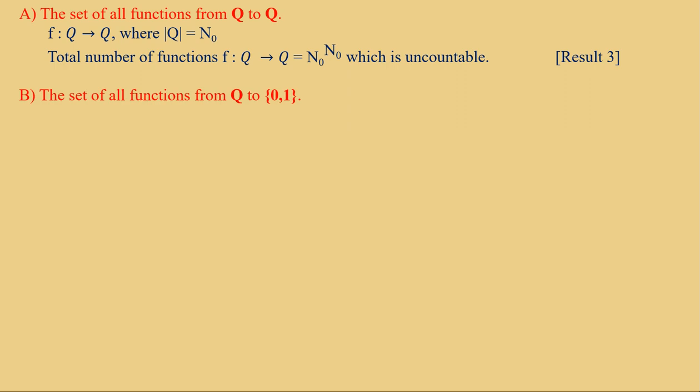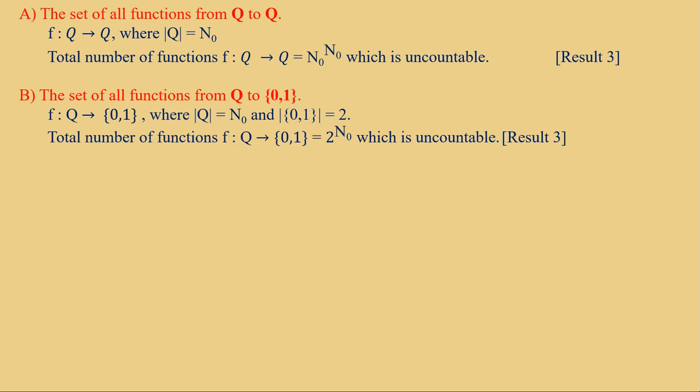Option B: the set of all functions from Q to {0,1}. The cardinality of Q is ℵ₀ and the cardinality of {0,1} is 2. Therefore, the total number of functions F from Q to {0,1} equals 2 raised to ℵ₀, which is also uncountable.